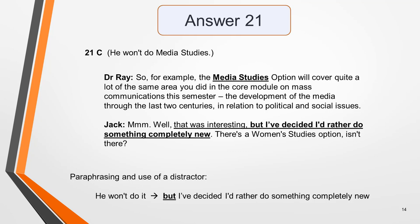This is how the answer has been paraphrased. 'He won't do it' has been paraphrased as 'I've decided I'd rather do something completely new.' Note the use of the distractor 'but', as Jack goes from a position of interest — which could suggest an answer of 'maybe' — to a decision of definitely not to do the course.